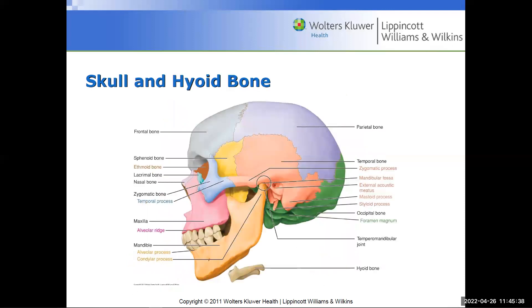Looking at the skull, it's color-coded so you can tell the difference between parts. We have the frontal bone, parietal bone, temporal bone, ethmoid bone, and the zygomatic — also known as the cheekbone. A forensic question: how can you differentiate a male from a female skeleton when tissue has decomposed? Anatomically, females tend to have wider hips.